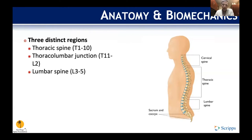Getting into anatomy, when we talk about thoracolumbar trauma there are three distinct regions. There's the T-spine, which is T1 to T10, then the thoracolumbar junction T11 to about L2, and then the lower lumbar spine which is L3 to L5.